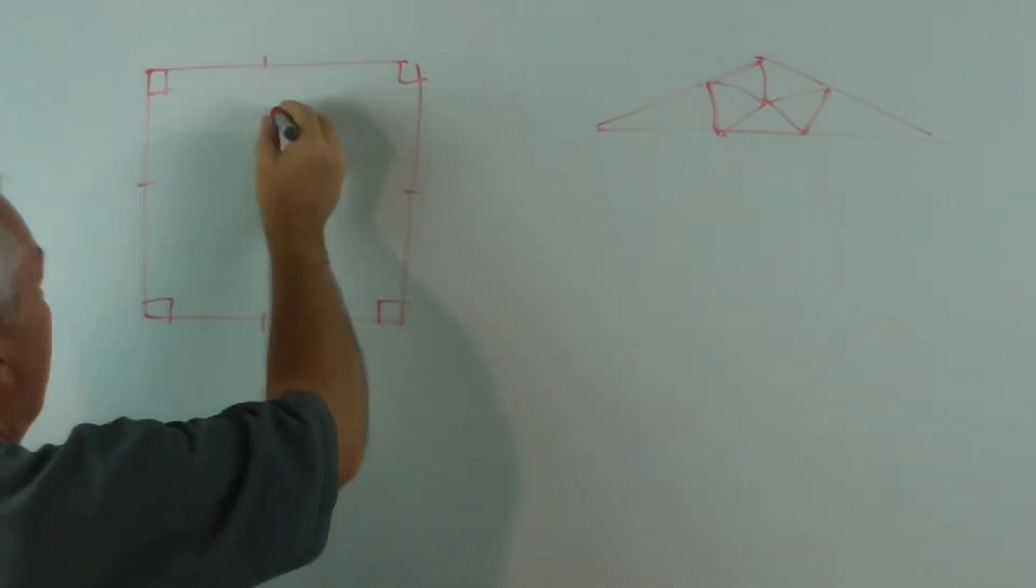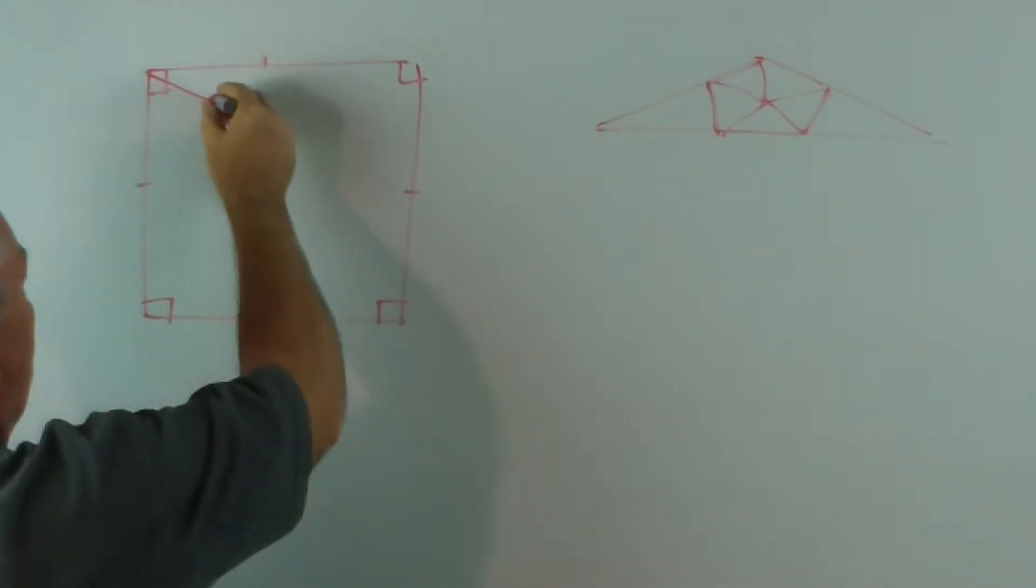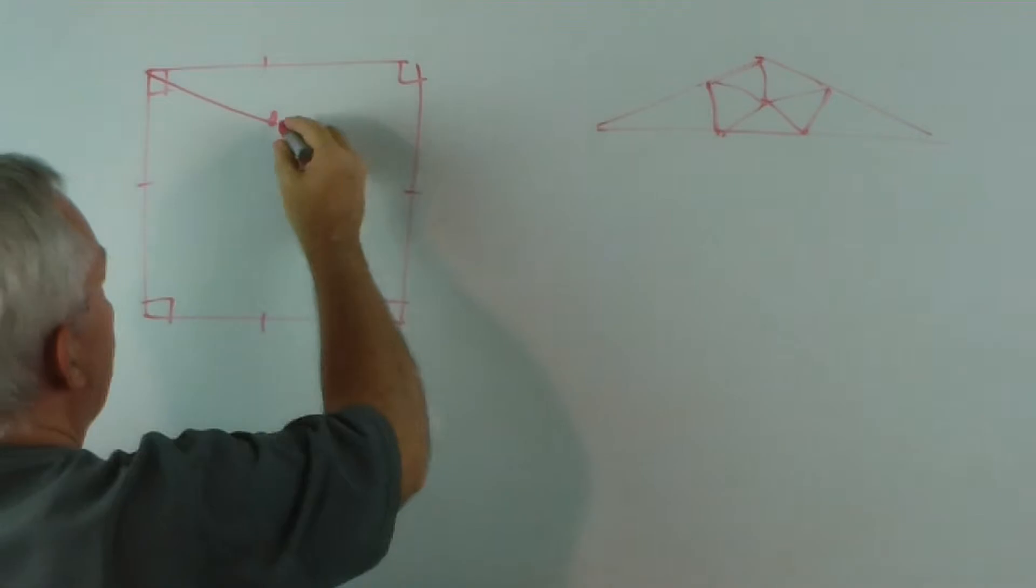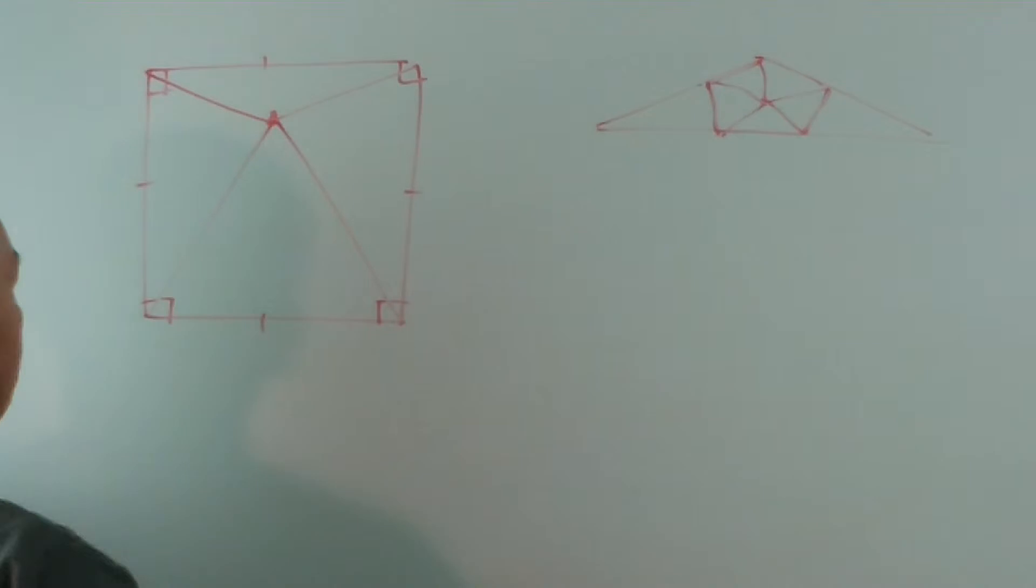And it can be done in this way. If I choose a point up here, towards the middle of the square, for example, and join all the, that was a bit badly done, join all the three corners, four corners.